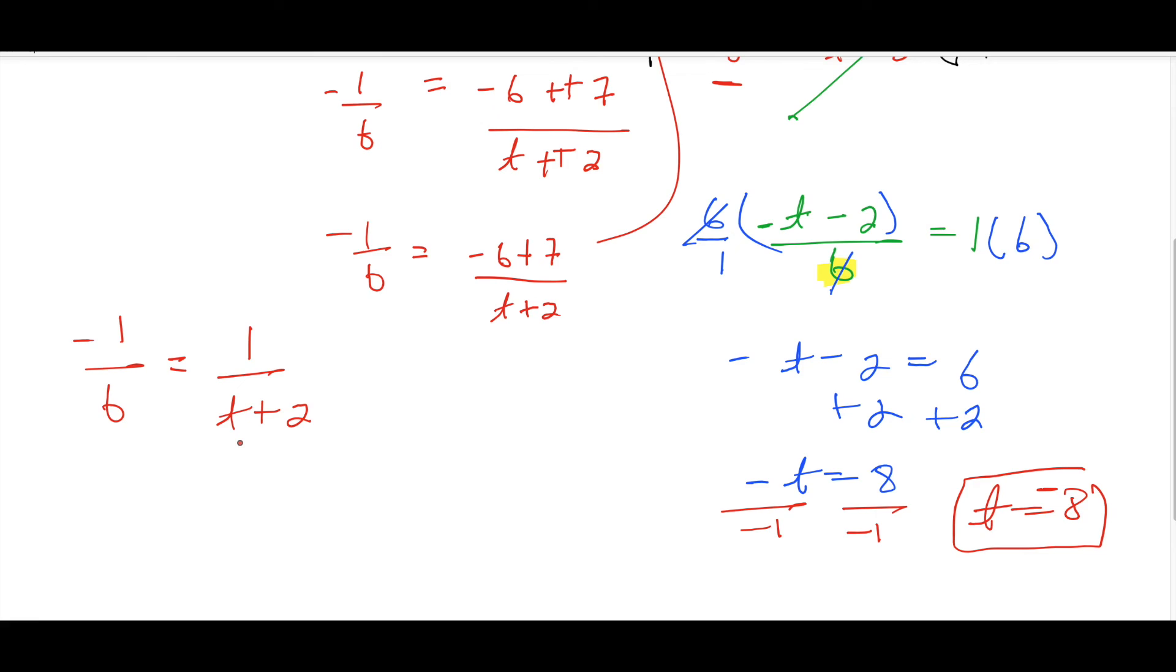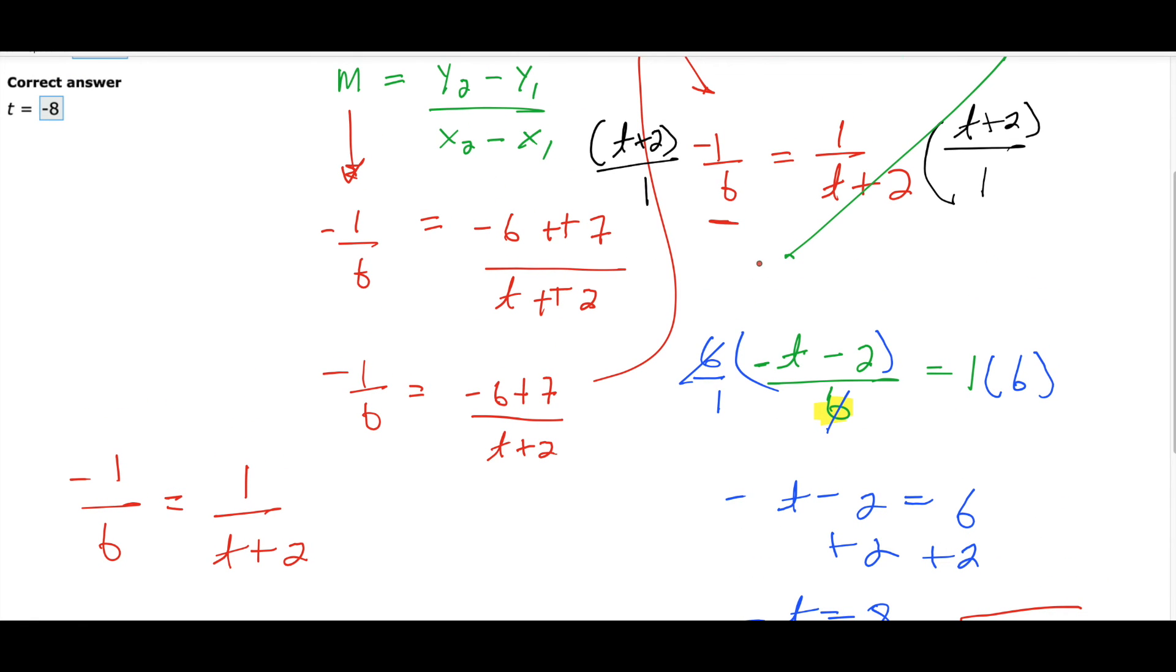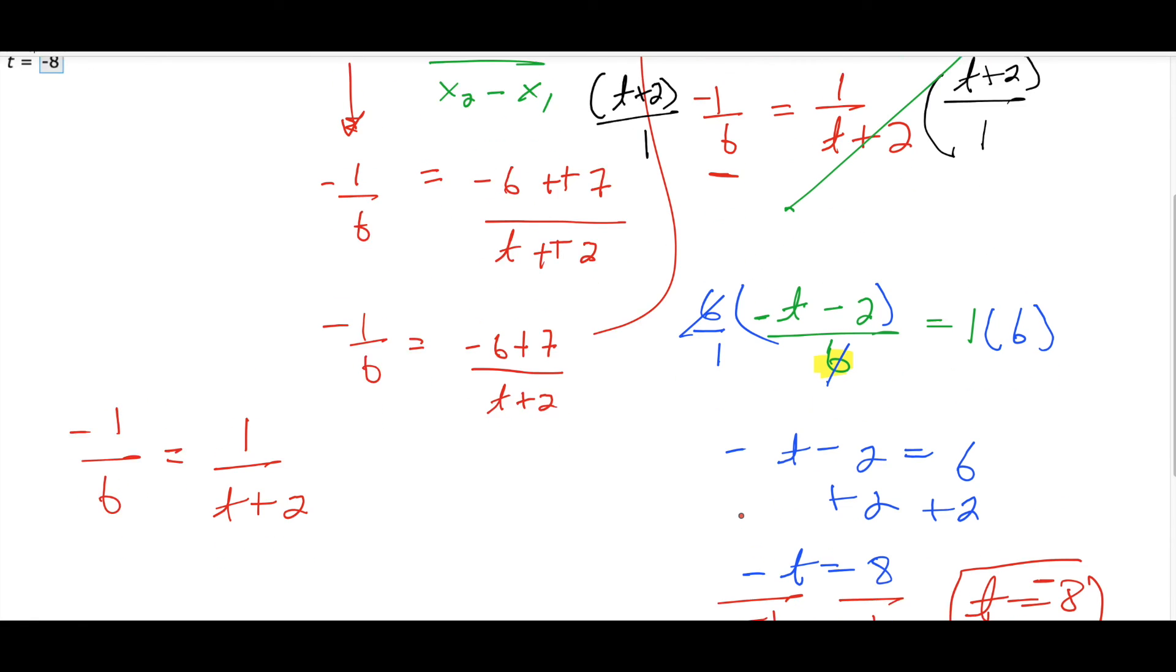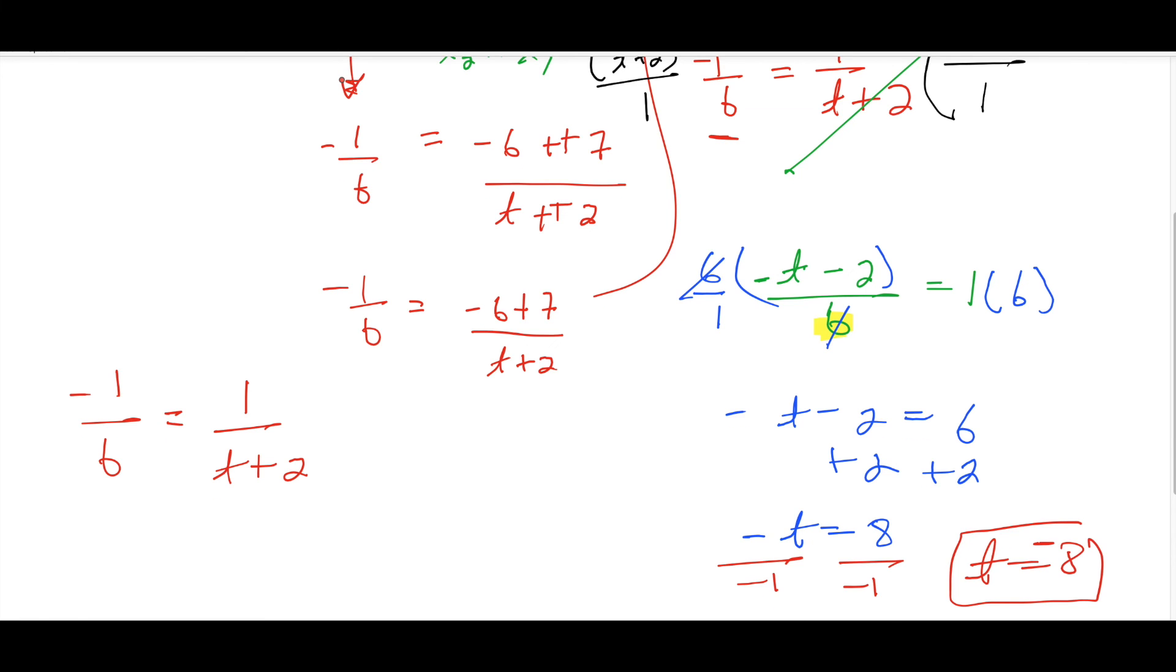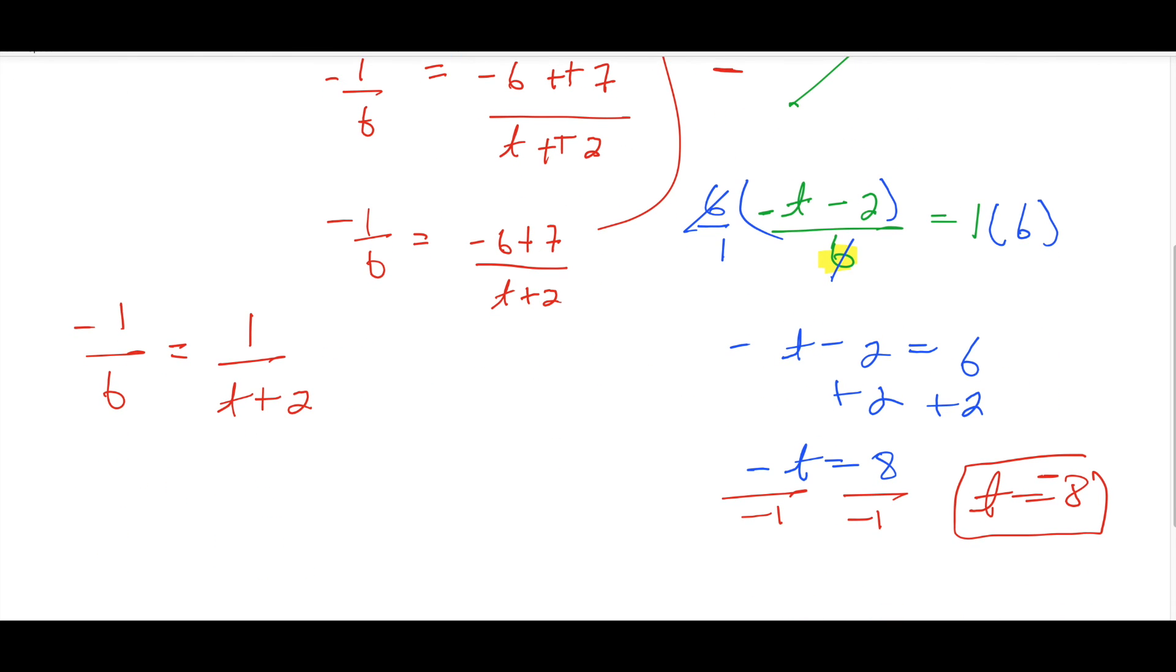The slideshow is this actually, this right here. So we're going to cross multiply. So that times that equals that times that, only with an equal sign in the middle. Alright, so how do you want to do it? 6 equals -t minus 2. Good. So -1 times t plus 2.